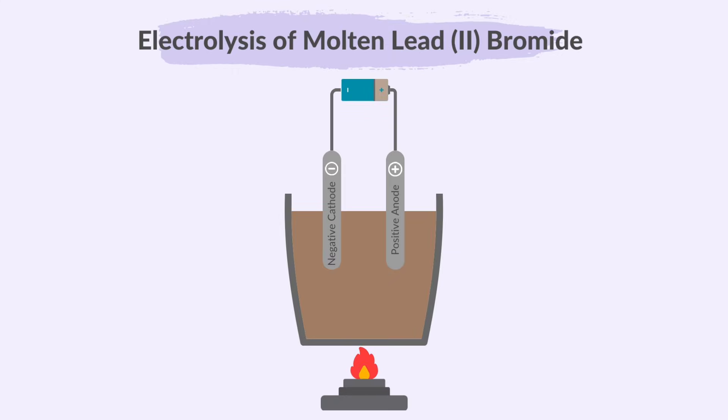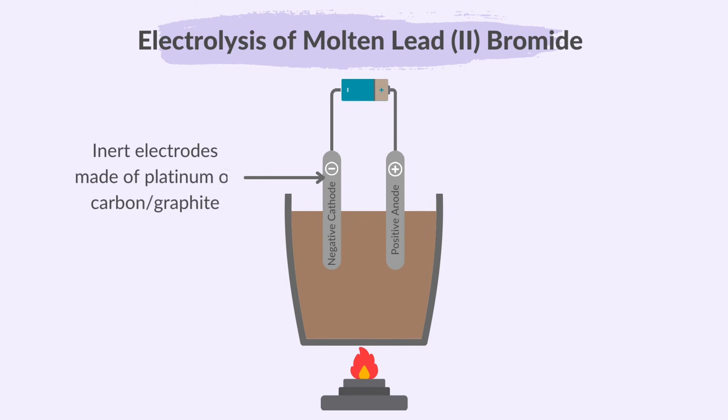Let's look at some electrolysis examples. First, the electrolysis of molten lead-2 bromide. Insert the inert electrodes made of platinum or carbon graphite into the molten lead-2 bromide. We use these inert electrodes because they don't get involved in the chemical reactions, avoiding any interference.